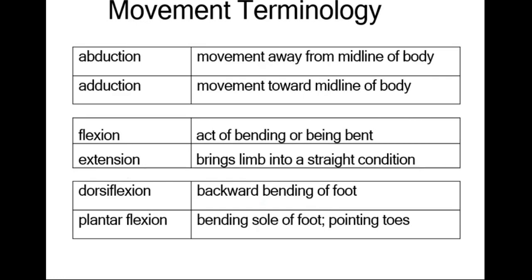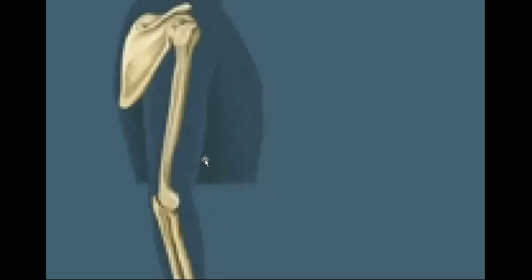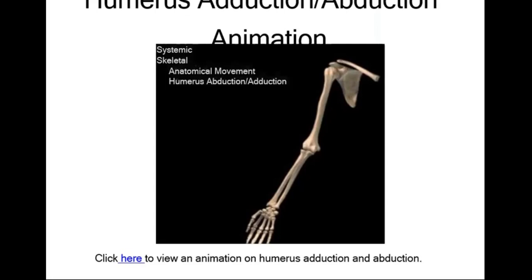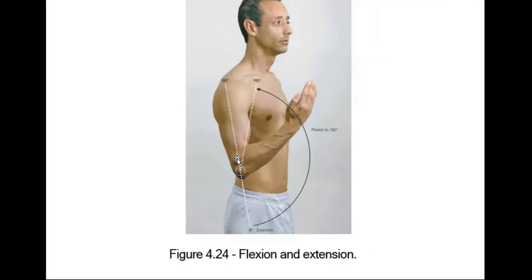Movement terminology: abduction is movement away from the midline of the body; adduction is movement toward the midline of the body. Flexion, extension, dorsiflexion, and plantar flexion — plantar flexion is especially for the foot. It is very important to understand the differences between movements in the upper limb and lower limb, including abduction and adduction.